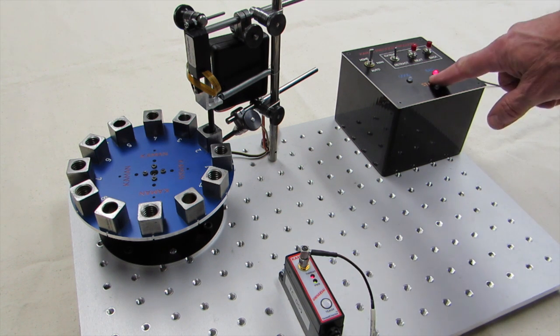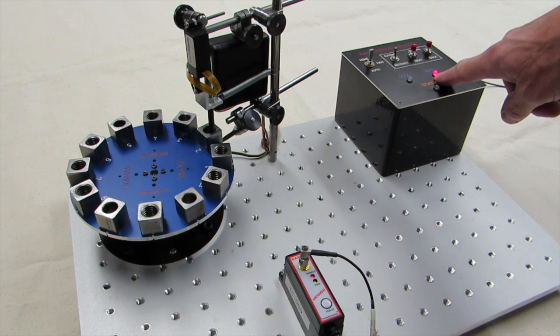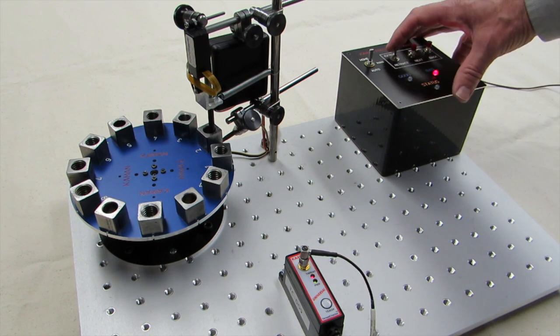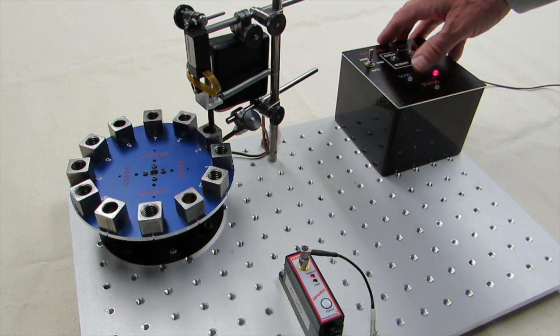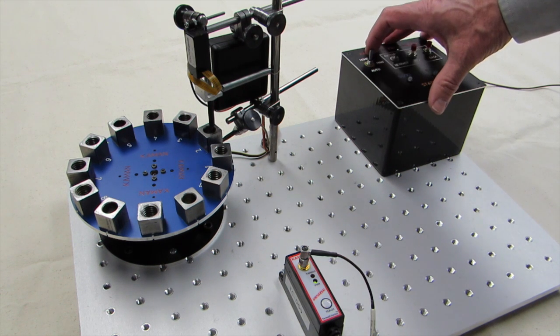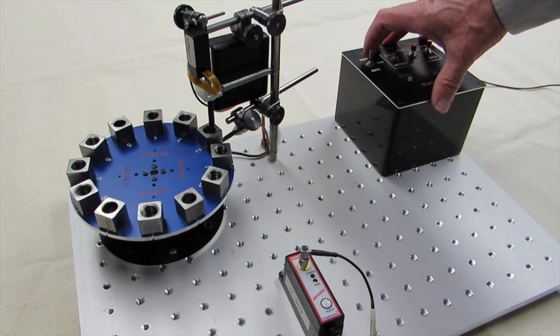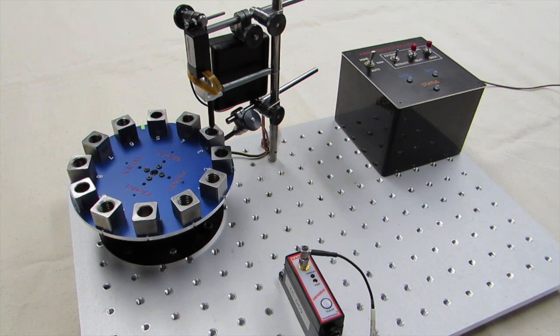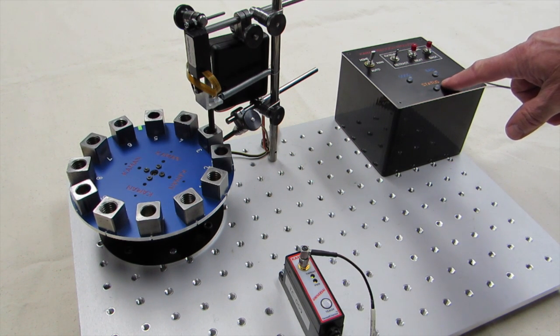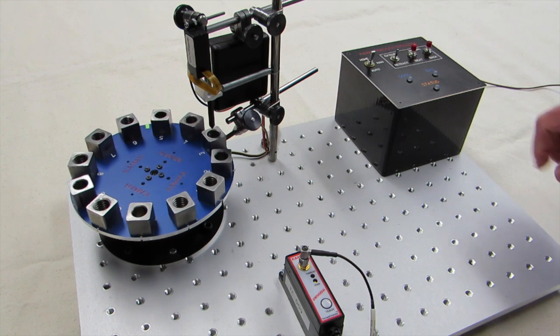You can see that the switched output from the device has indicated that it's an unthreaded part right now. We'll now set the display into Auto Mode, and you can see as it goes around the turntable and checks the individual parts, the light on the device will indicate if there's a threaded part.